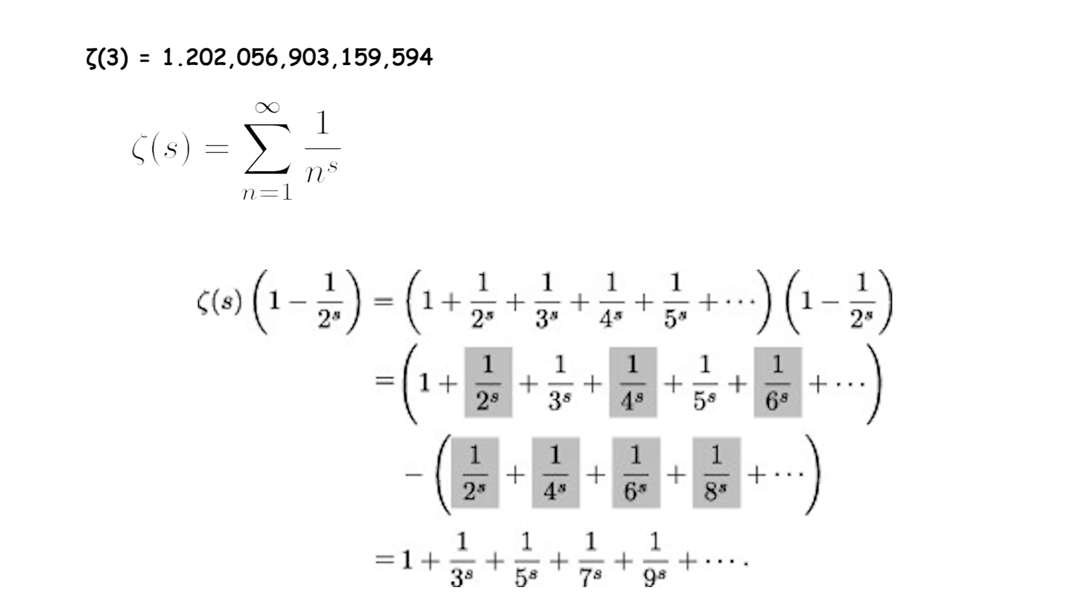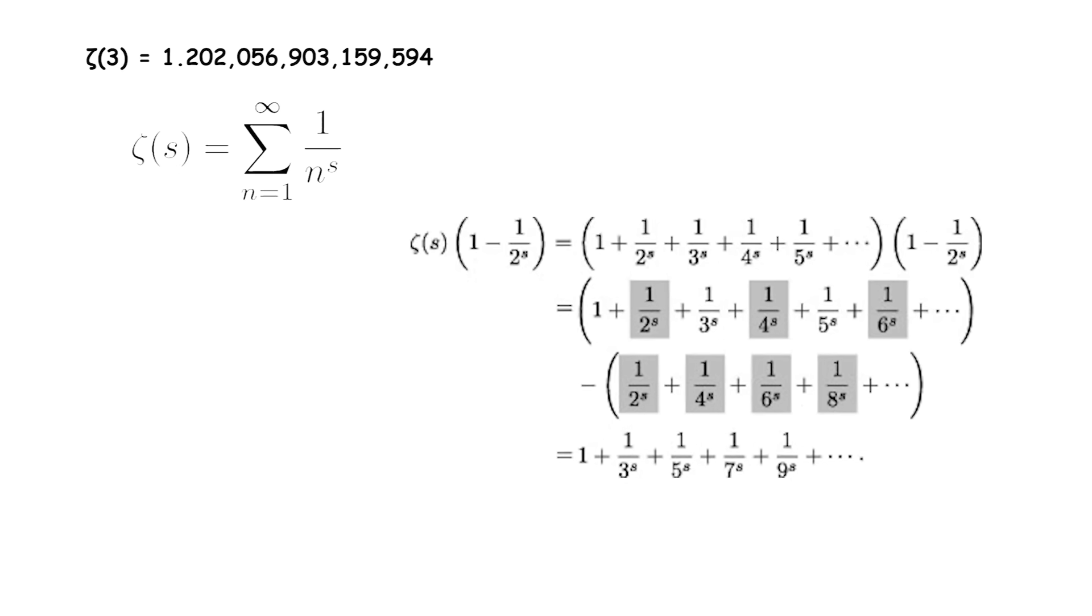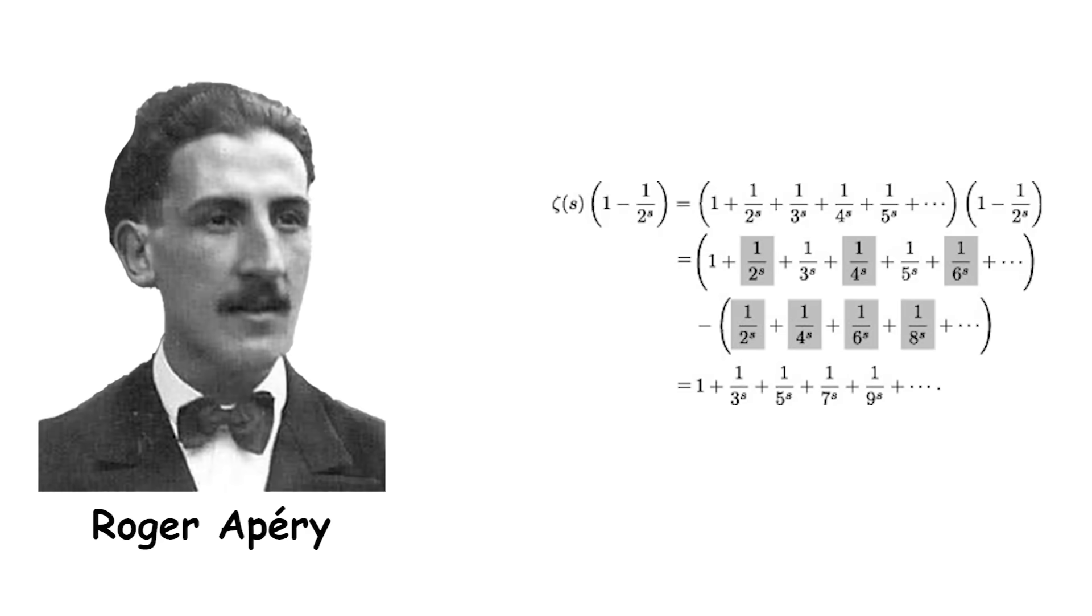Apéry's constant is an irrational number, meaning it cannot be expressed as a ratio of two integers. This was proven by the French mathematician Roger Apéry in 1979, and the exact value of zeta(3) is not known, but it can be approximated using various series expansions and numerical methods.